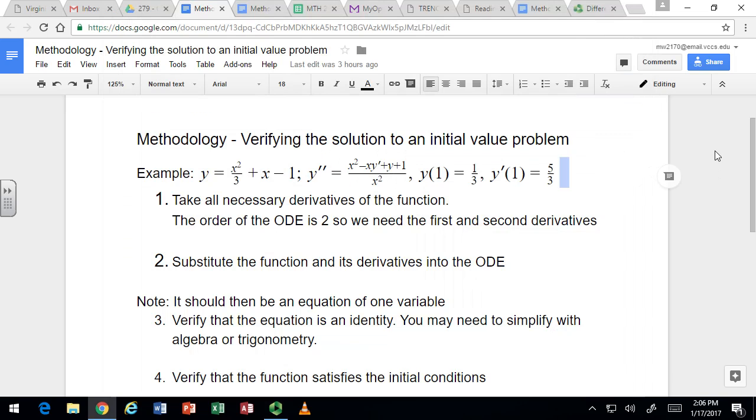All right, in this video we're going to see how to verify the solution to an initial value problem. This is example 6b from the book, and the function we think is a solution is y equals x squared over 3 plus x minus 1.